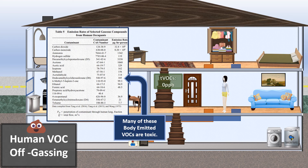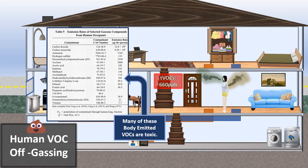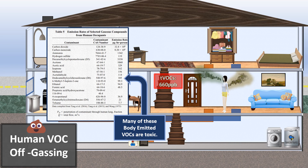Human VOC off-gassing. Our bodies emit VOCs, and these VOCs are actually toxic. Humans were not meant to live indoors — we're supposed to be outside. Now we are indoors in sealed homes, inhaling our own toxic VOCs. Our body releases this as a form of detoxifying itself, and we need to filtrate these from the air and surfaces.